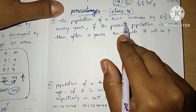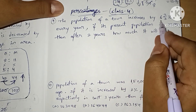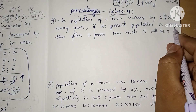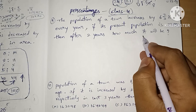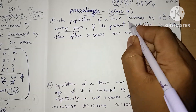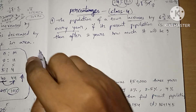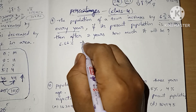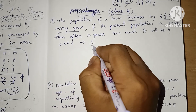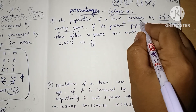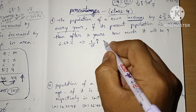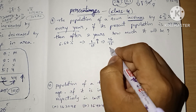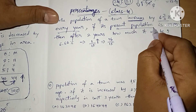The question given is: the population of a town is increased by 6⅔ percent every year. If the present population is 33,750, then after two years how much will it be? Every year the percentage increased is 6⅔, which is 6.66 percent. 6.66 percent is nothing but 1/15 as a fraction, and since it increases, we use the fraction 16/15.